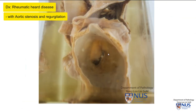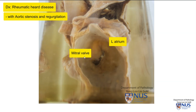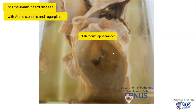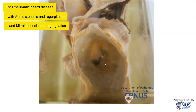Perhaps we can have a closer view here. This is the left atrium and this is the opening of the mitral valve into the left ventricle. This is known as a fish mouth appearance because we can see that the mitral valve is actually thickened and fused in this position. You can imagine that there is a degree of stenosis and also, because the valve is not able to close fully, likely regurgitation.